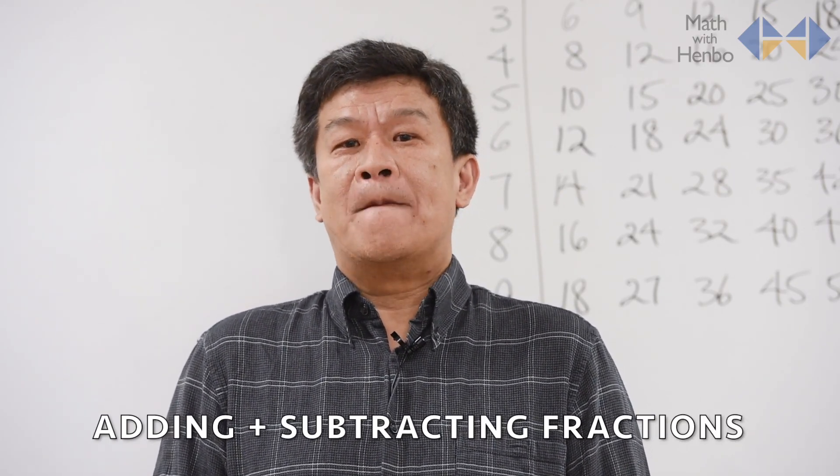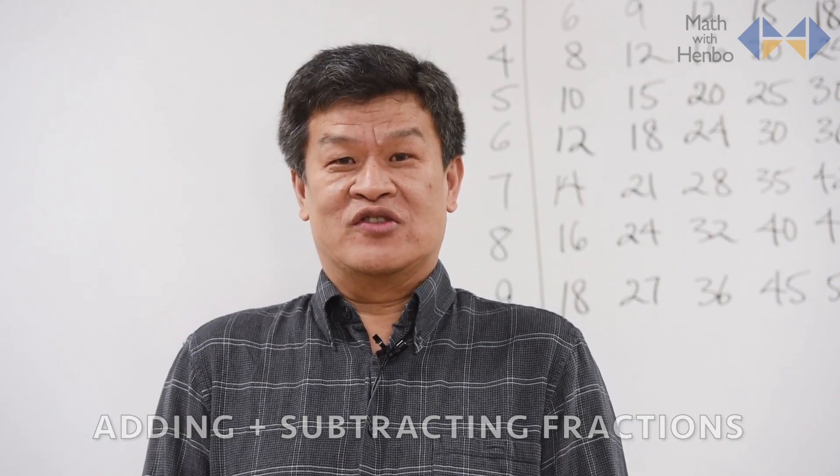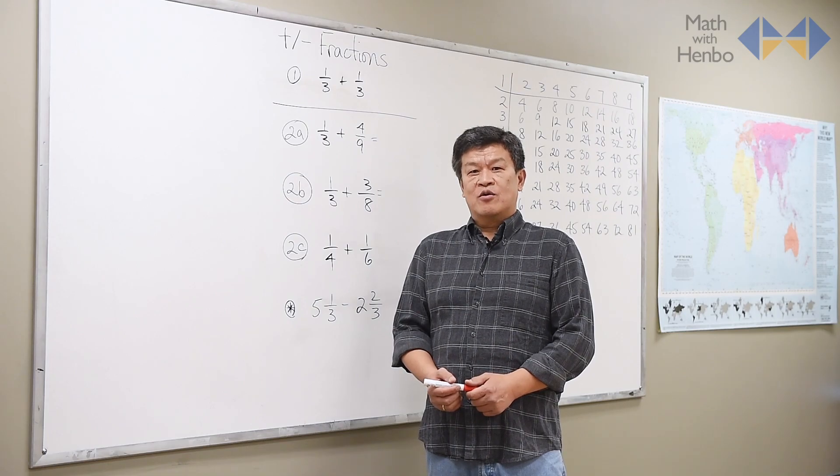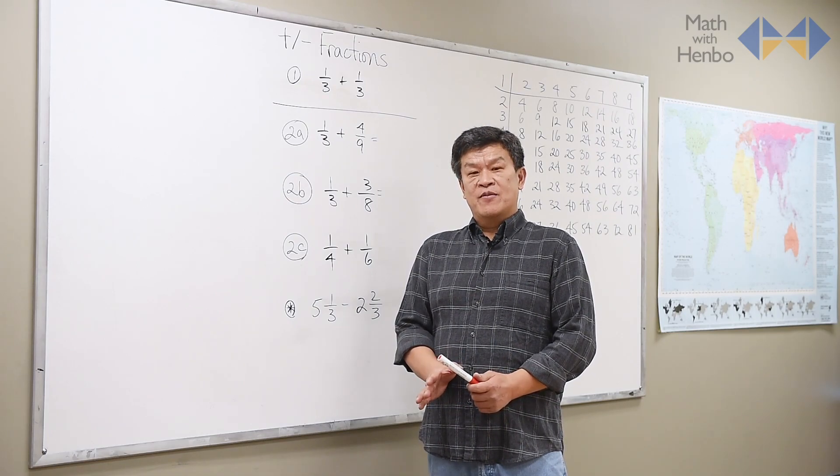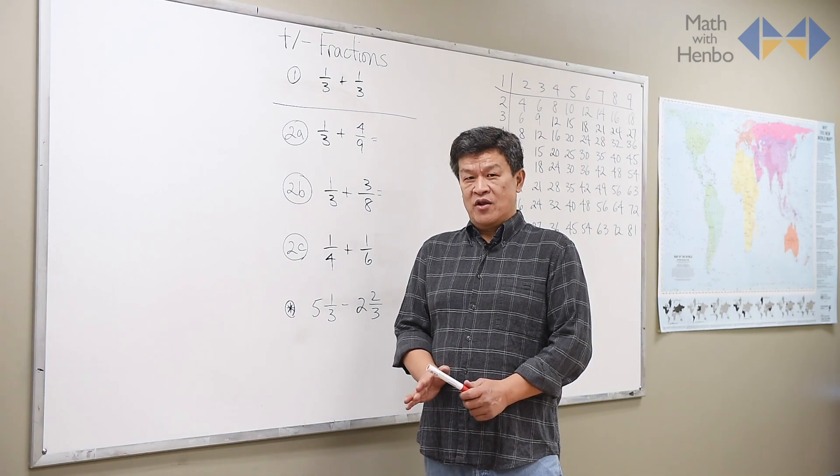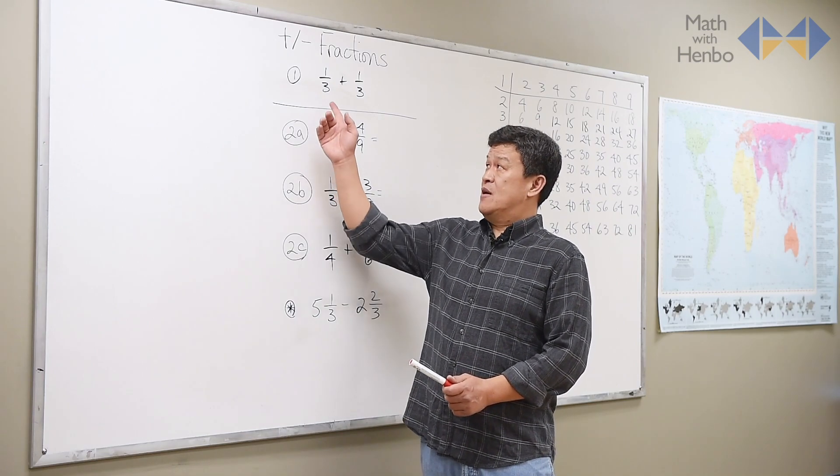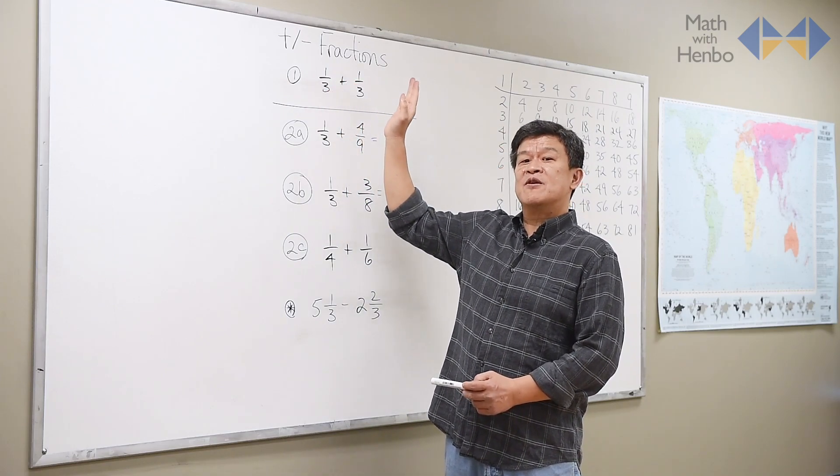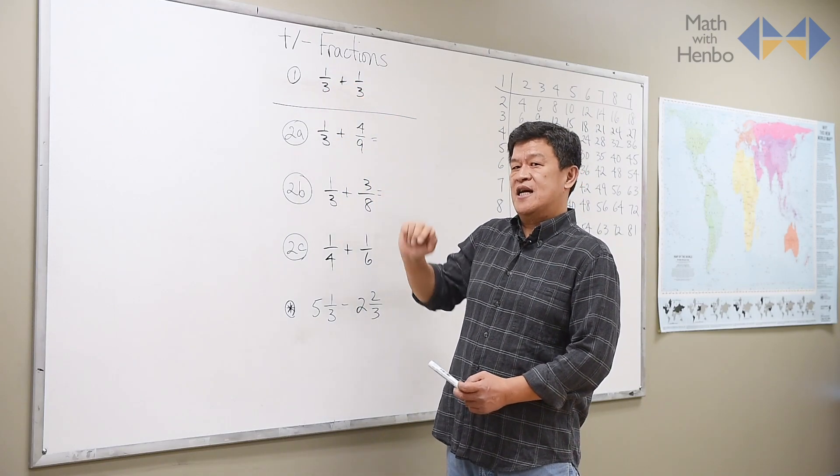In this session, we're going to cover adding and subtracting fractions. When it comes to doing fractions, especially adding and or subtracting, we have to note that the bottom numbers are the most important. They have to be the same before we can do anything. The reason is that the bottom number represents the size of the piece, and the top number represents the number of pieces in that size.